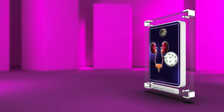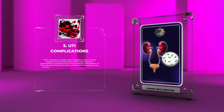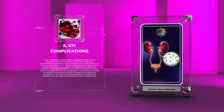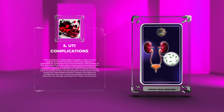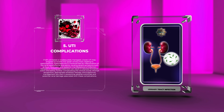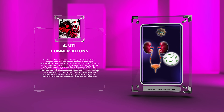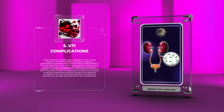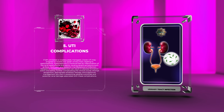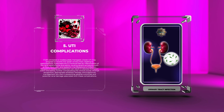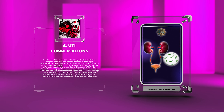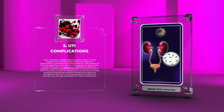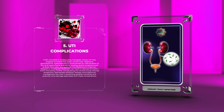If left untreated or inadequately managed, a lower UTI may progress to involve the upper urinary tract, leading to pyelonephritis. Pyelonephritis is characterized by inflammation of the renal parenchyma and pelvis, causing severe symptoms such as fever, flank pain, and systemic manifestations of infection. Delayed or inadequate treatment can result in abscess formation within the kidney, further complicating the clinical course. Prompt recognition, appropriate antibiotic therapy, and supportive management are vital in preventing adverse outcomes and potential renal damage.